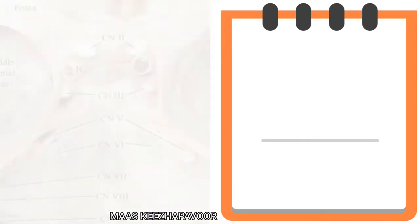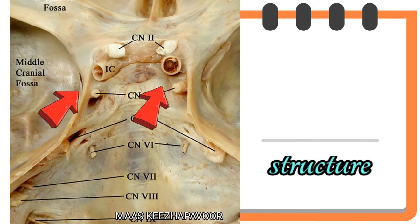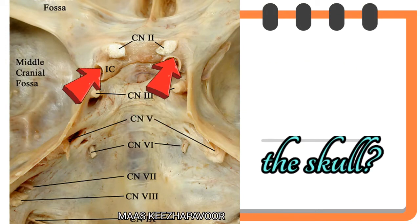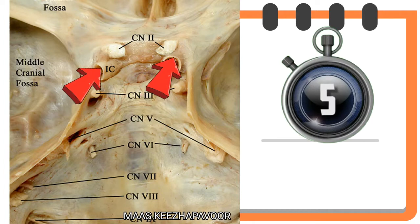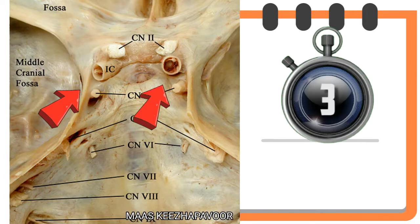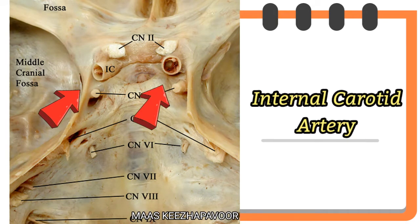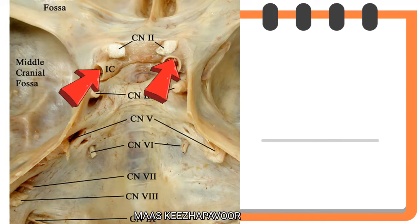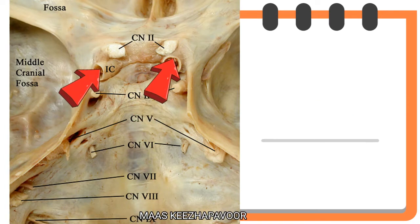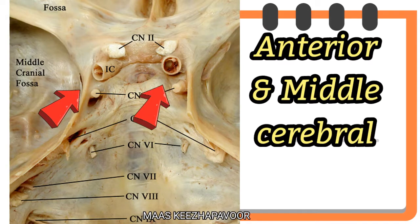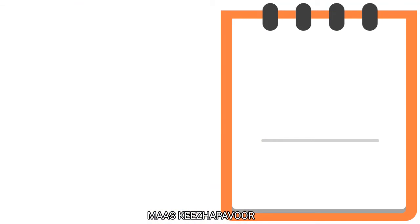The next question is: Identify the pointed structure. How does it enter into the skull? What are its terminal branches? The pointed structure is internal carotid artery. It enters into the skull through carotid canal. It terminates by dividing into anterior and middle cerebral arteries.